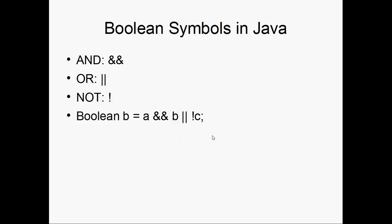We have some basic Boolean symbols in Java. AND is going to be represented by two ampersands, OR will be represented by two vertical lines. That can be found above your enter key by hitting shift and then the key between the enter and backspace. And then NOT is simply an exclamation point.